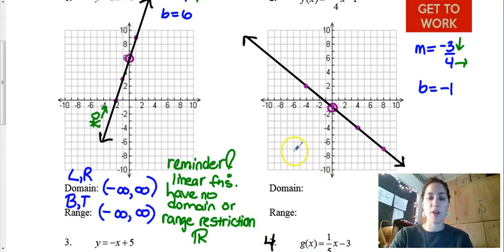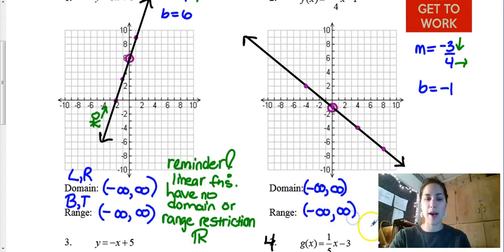So right away I see this is a linear function. I come in from the left, the right, the bottom, the top, arrows everywhere with no jumps or gaps or weird anything going on in the middle that I would need to worry about. So domain and range for both negative infinity to positive infinity.